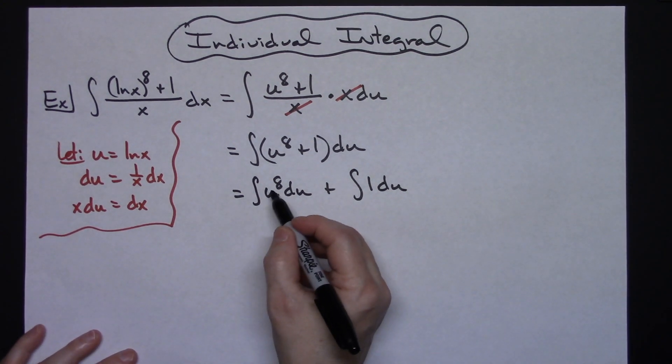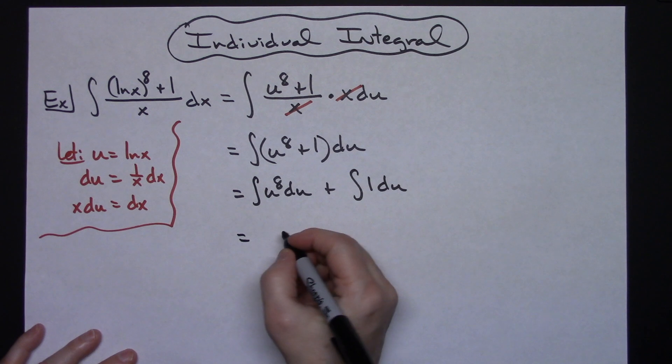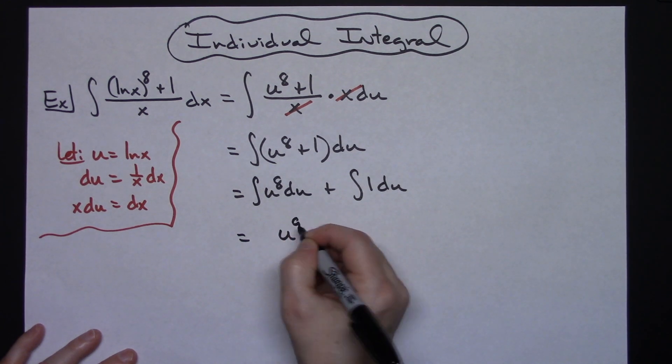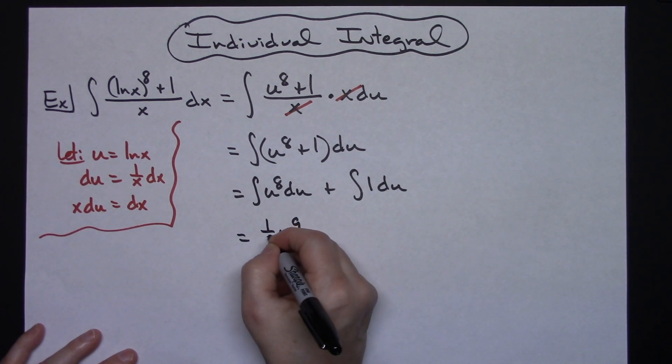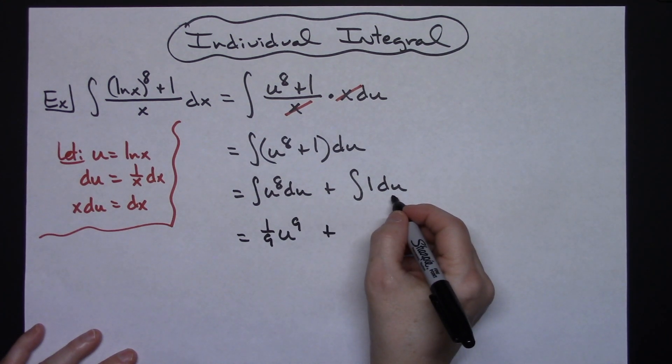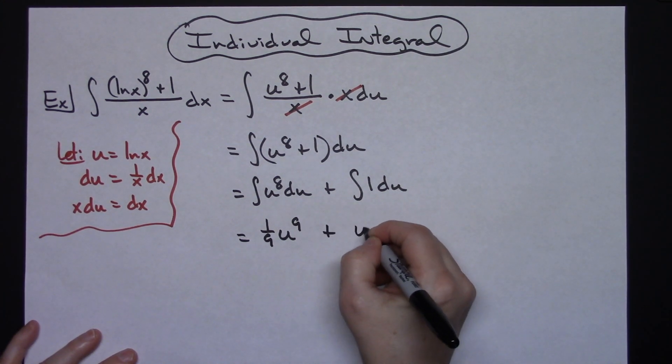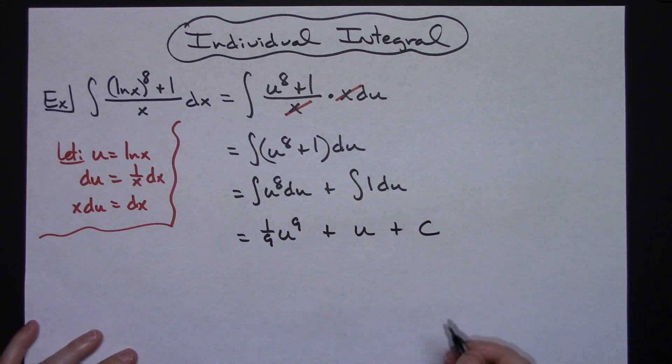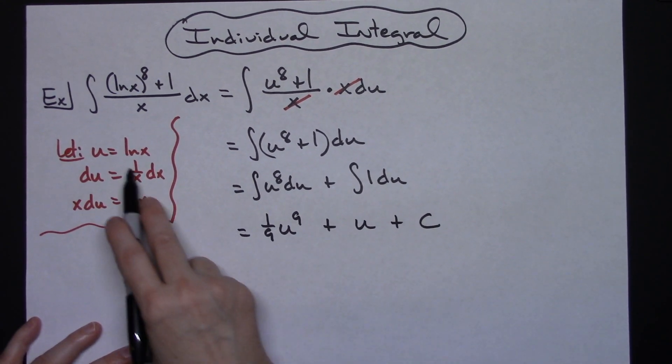Integrating the u to the eighth, I'm going to add 1 to the exponent. So I'll have u to the ninth with the reciprocal out in front of 1 ninth. Integrating 1 with respect to that du right there is just going to give me a u. I can go ahead and put my plus C in because now I've integrated both of those u's.